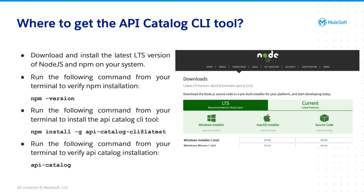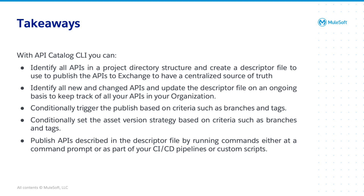If your installation from NPM runs for a long time and does not complete successfully, work with your security admin to ensure that your system allows you to install from NPM. Once you have the API Catalog CLI tool installed on your system, verify that it has been installed by running api-catalog. API Catalog CLI enables you to discover and catalog your API definitions, documentation files, and associated metadata as part of an automated process. You can embed the publish asset command in your automation tools, such as a CICD pipeline or custom scripts, to automatically trigger the publishing of your API assets to AnyPoint Exchange. With the API Catalog CLI tool, you can identify all APIs in a project directory structure and create a descriptor file to publish the APIs to AnyPoint Exchange as a centralized source of truth.